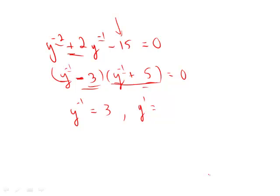When you set them equal to 0, you subtract by the 5, and hence we get negative 5. Now we can solve for both of these. Anything with a negative 1 exponent is simply flipped over, which is 1 third. Same over here. Negative 5 flipped over is negative 1 fifth.